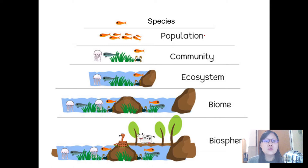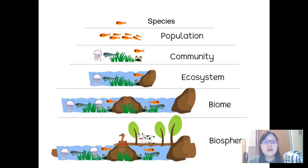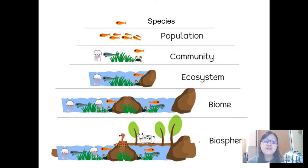Now, many populations of different species together is called a community. And that community, if it interacts with its environment — and I'm sure it does — the community together with its environment and all its interactions is considered to be the ecosystem. If you zoom out a little bit, what do you call something that comprises multiple ecosystems? That would be a biome. For example, your local forest could be an ecosystem. Let's use Taman Negara, the National Park of Malaysia in Pahang. This is an ecosystem.